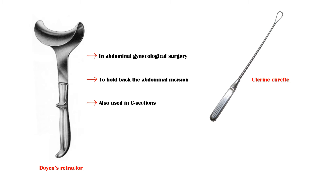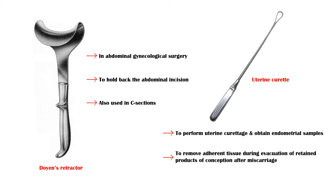Uterine curette has several uses. It is used to perform uterine curettage and obtain endometrial samples. In addition, it is used to remove adherent tissue during evacuation of retained products of conception after miscarriage, and to break intrauterine adhesions during hysteroscopy.